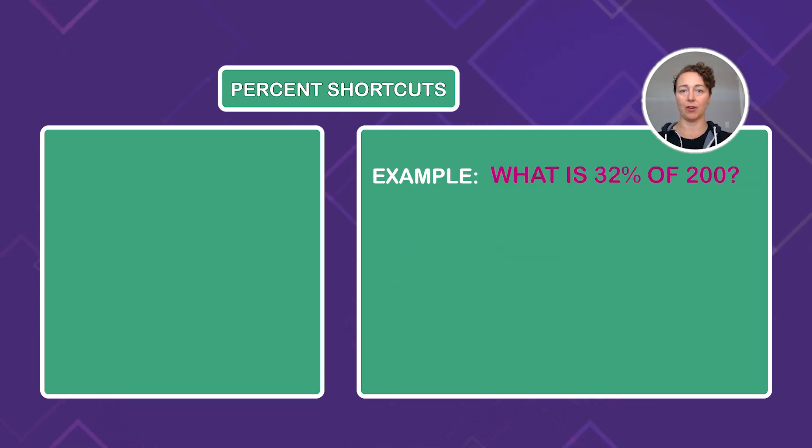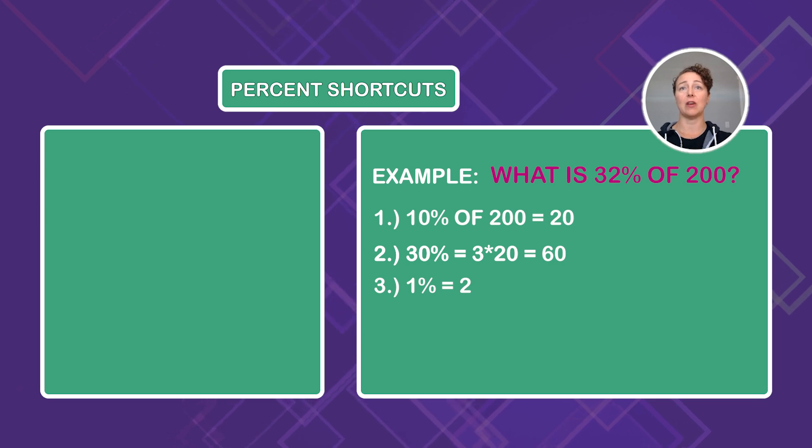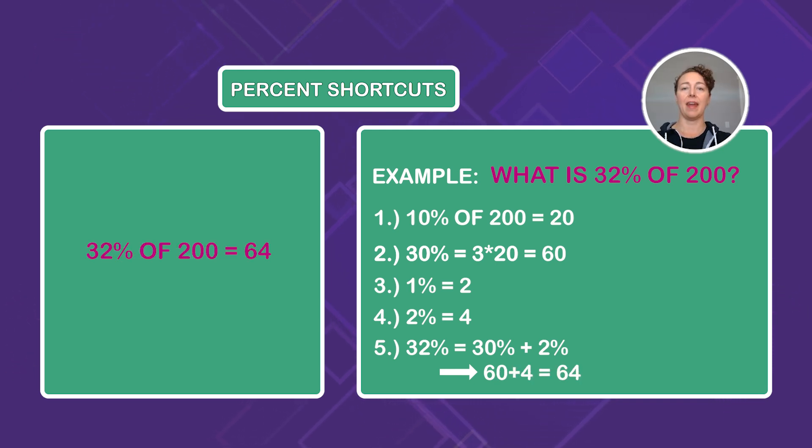Let's check out another one. What is 32% of 200? Again, we're going to break it up. We know that 10% of 200 is 20. And 30% is just going to be 10% three times. So that means 30% is three times 20 or 60. To figure out the rest, we just need to move the decimal two places to the left to determine 1% of 200, and that's going to equal two. Now to get 2%, we just have to double 1%. So that's going to give us four. We have all of our pieces and we just need to add them together for our result. So 32%, that is 30% plus 2%. And if we break that into values, that is going to be 60 plus 4 or 64. Now, here's one for you to try.